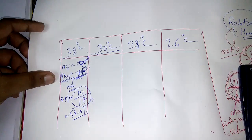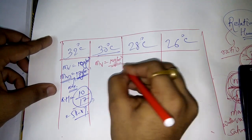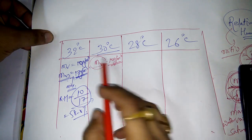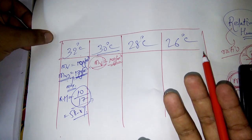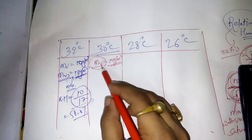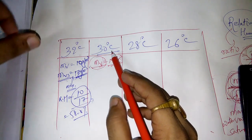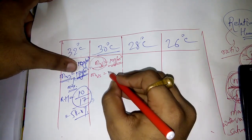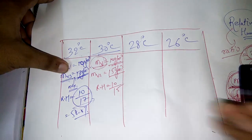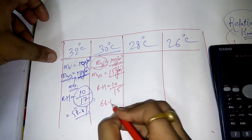At 30°C, the moisture content MV remains 10 grams per cubic meter — it is not going to change when you decrease the temperature. But MVS decreases; suppose it becomes 15 grams per cubic meter. Then relative humidity is 10 divided by 15, which equals 66.67%.